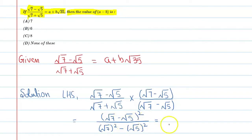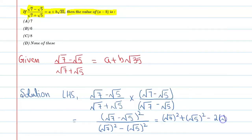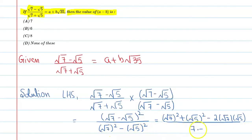Applying the identity (a - b)² in the numerator, we get (√7)² + (√5)² - 2·√7·√5. And in the denominator, √7 raised to power 2 gives 7, minus √5 raised to power 2 gives 5, so the denominator becomes 7 - 5.